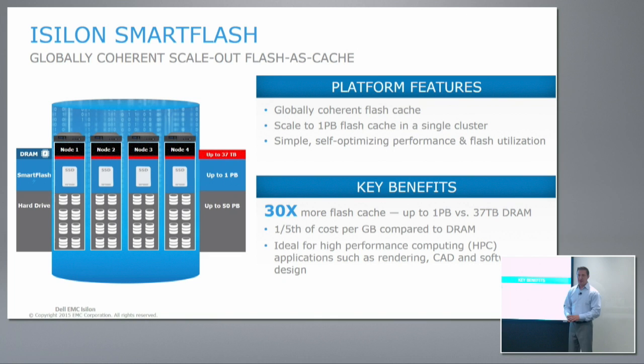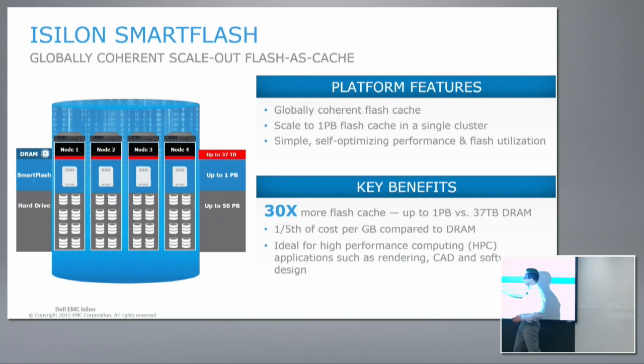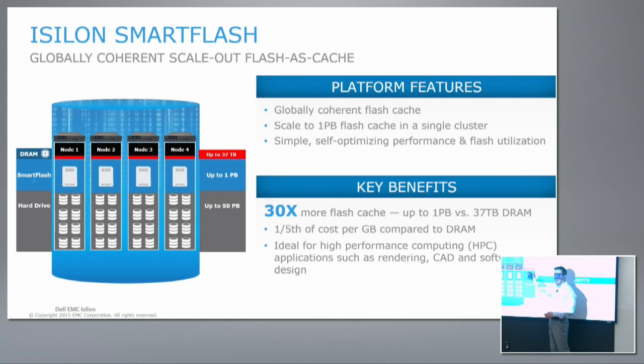We've added the ability to provide read caching. Read caching has always been there — using the RAM memory inside of the node. We have two sections of RAM: L1 and L2. L1 is more of a logical cache, and L2 is kind of like a physical cache where the blocks that are in that node are cached into L2 memory and then evicted out at some point. L1 is the logical cache for file information, so as you read a file, it moves into L1.